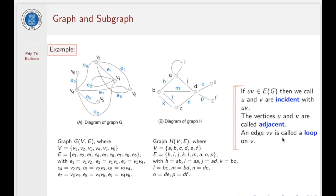An edge of VV is called a loop on V. This is a loop or this one is a loop.